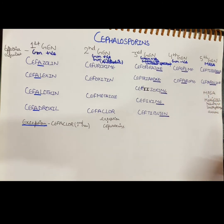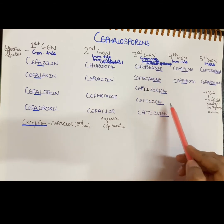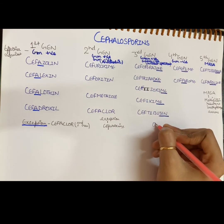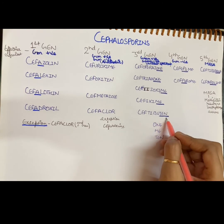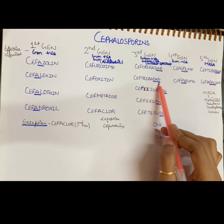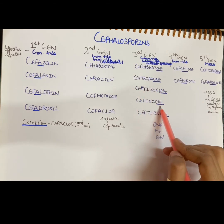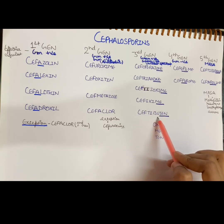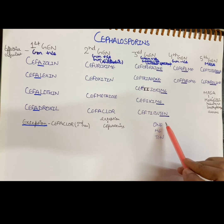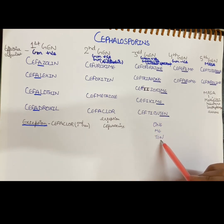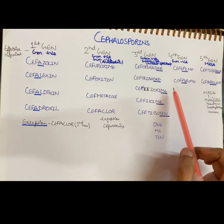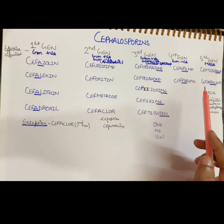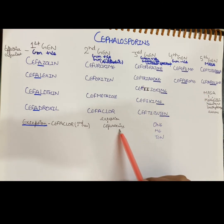For the third generation, we look for 'one', 'me', and 'ten' after Ceph. For example, Ceftriaxone, Cefixime, Ceftibuten — whenever you find 'one', 'me', or 'ten' after Ceph, it belongs to the third generation cephalosporin.